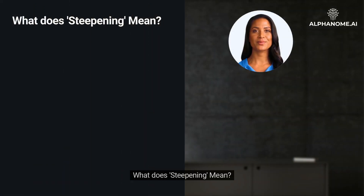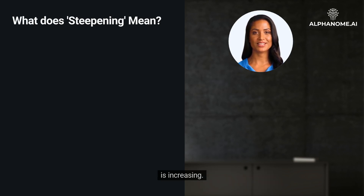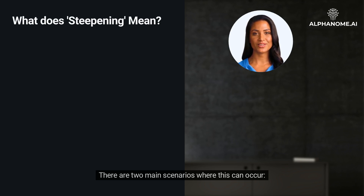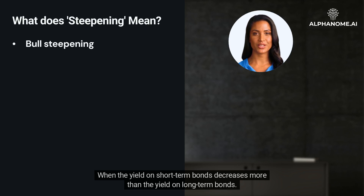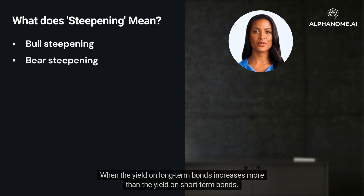What does steepening mean? A steepening yield curve means that the spread between the yields of long-term bonds and short-term bonds is increasing. There are two main scenarios where this can occur: bull steepening, when the yield on short-term bonds decreases more than the yield on long-term bonds; and bear steepening, when the yield on long-term bonds increases more than the yield on short-term bonds.